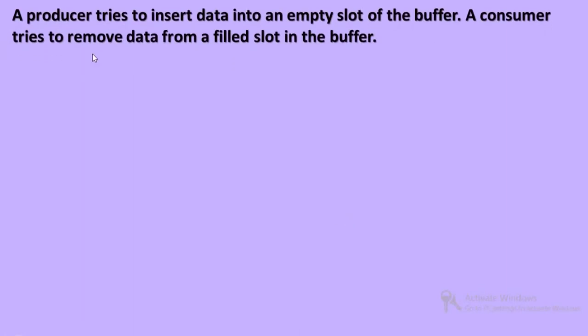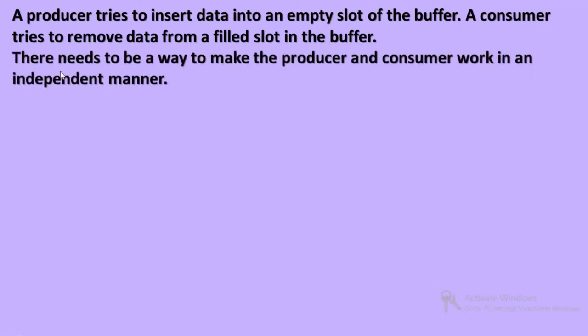What is the problem? The producer tries to insert data into an empty slot of the buffer. The consumer tries to remove data from a filled slot in the buffer. The producer and the consumer will simultaneously use the buffer. We can overcome these problems with the help of semaphores. We need to make the producer and consumer work independently and simultaneously.